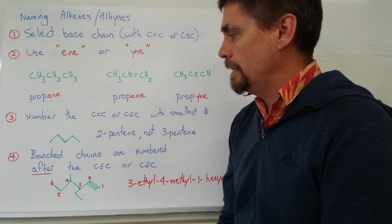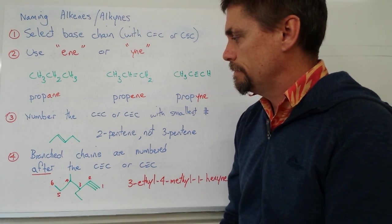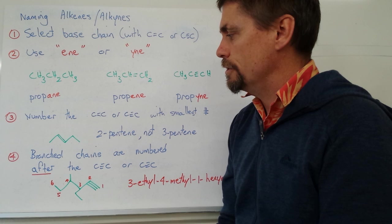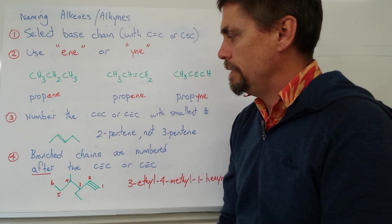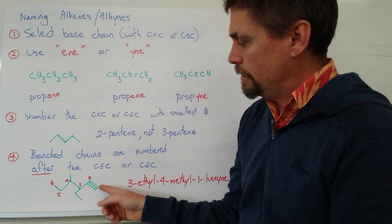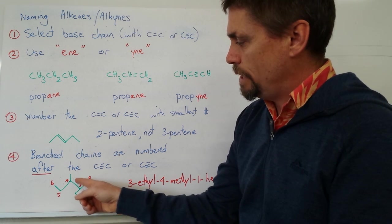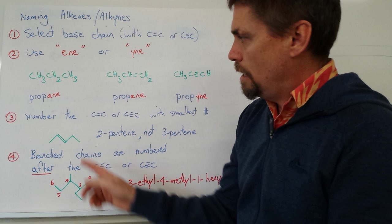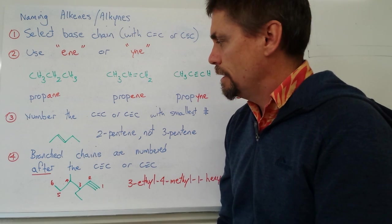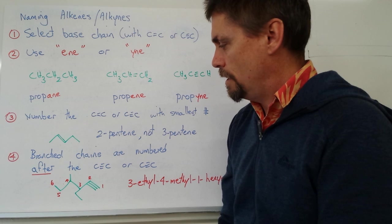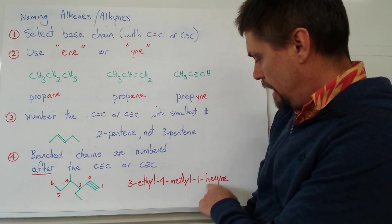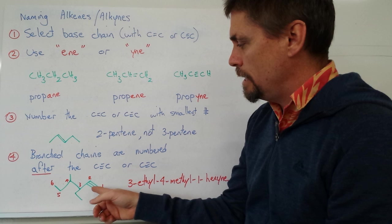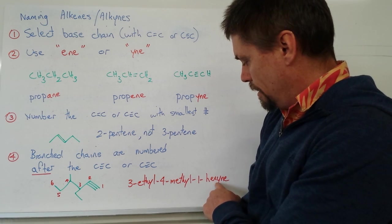We can also name alkenes and alkynes with branched chains. The preference is to name our double bond with the lowest carbon number first, as stated in rule number 3. Looking at this molecule, we have carbon numbers 1, 2, 3, 4, 5, and 6, with some other groups coming off it. The rule says to look for the lowest carbon number for the alkyne — we've got 6 carbons, so 'hex-' is our prefix, and it's '-yne' because it's a triple bond, making this 1-hexyne.